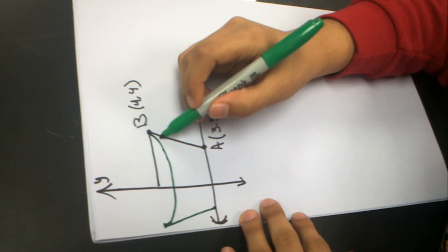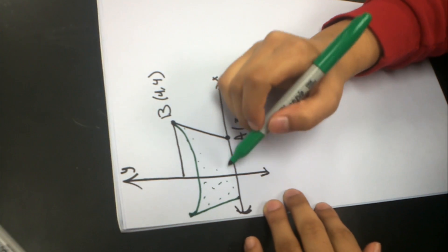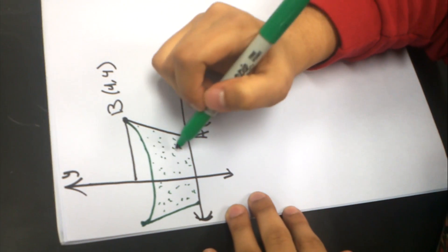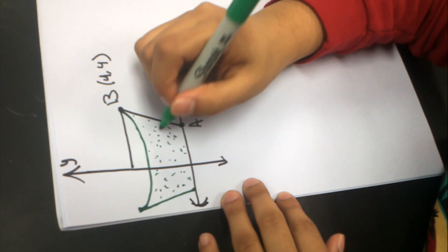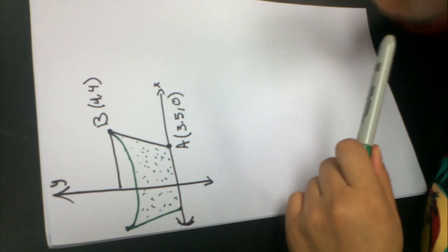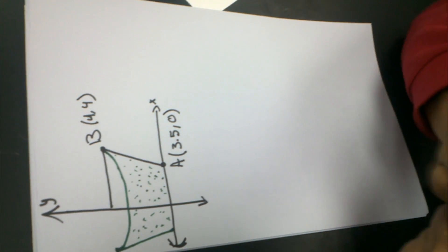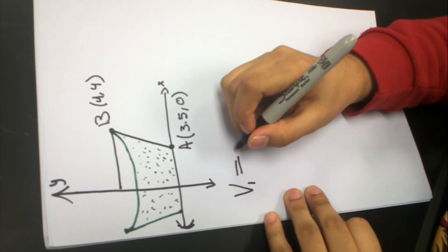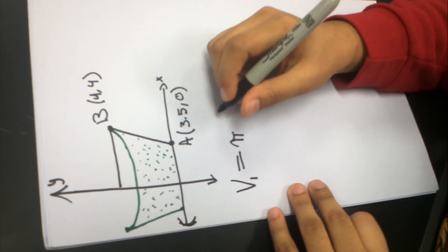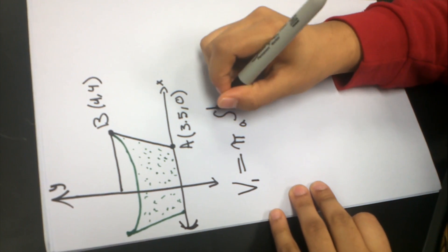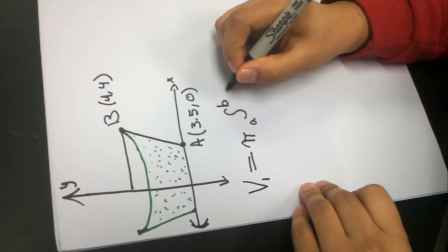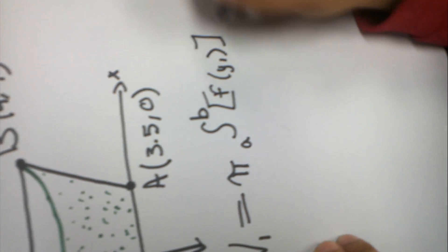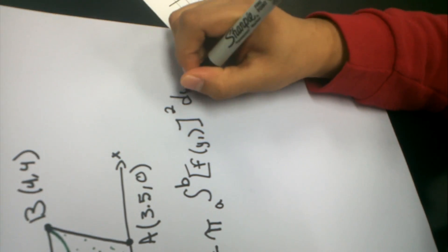So what we're doing is we're finding the volume of all this area, all of it, because the shape it will make is a truncated cone. To find the volume of a truncated cone, you use the formula V₁ = π ∫[A to B] [F(y)]² dy.